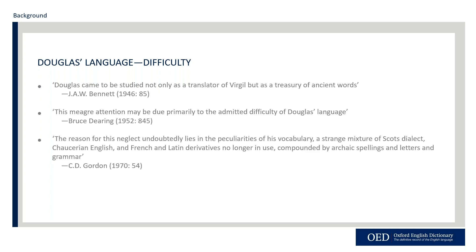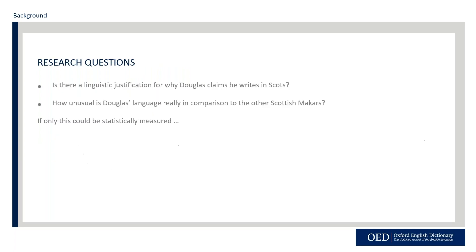While old linguists like Franciscus Junius appreciated this variety of vocabulary, many 20th-century scholars attribute to this lexical variety a sense of difficulty that has resulted in Douglas being studied less than other Scottish Makars like Henderson and Dunbar. They recognize that he not only uses lexical sources from different places but from different times, and that he generally favors obscure words. This raises several questions: is there a specific reason Douglas declares he writes in Scots when others do not? Is there a linguistic justification tied to his variety of language or translation needs? And how unusual is Douglas's language really when compared to the other Scottish Makars?